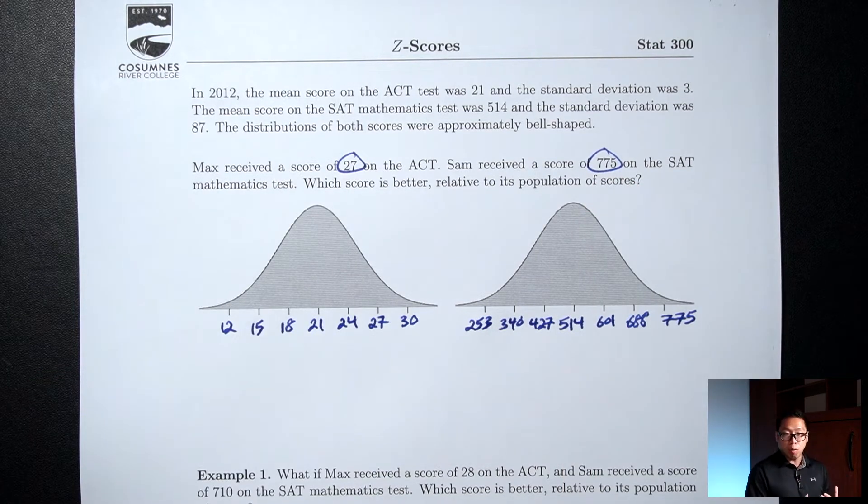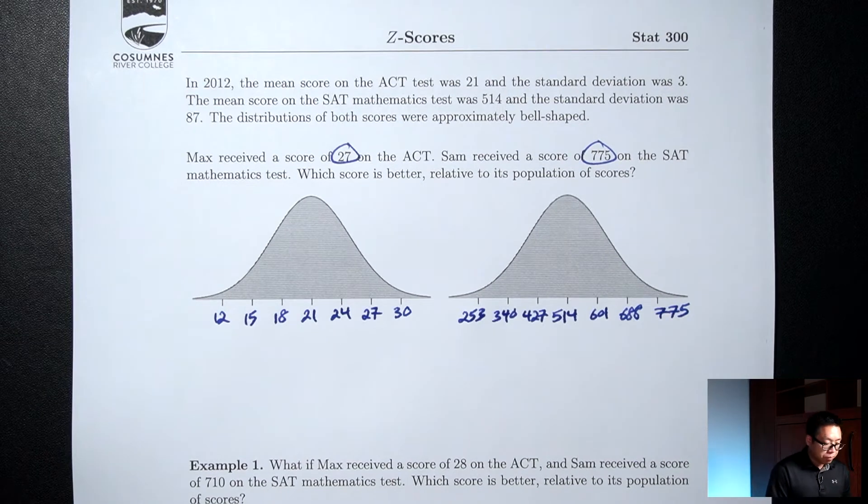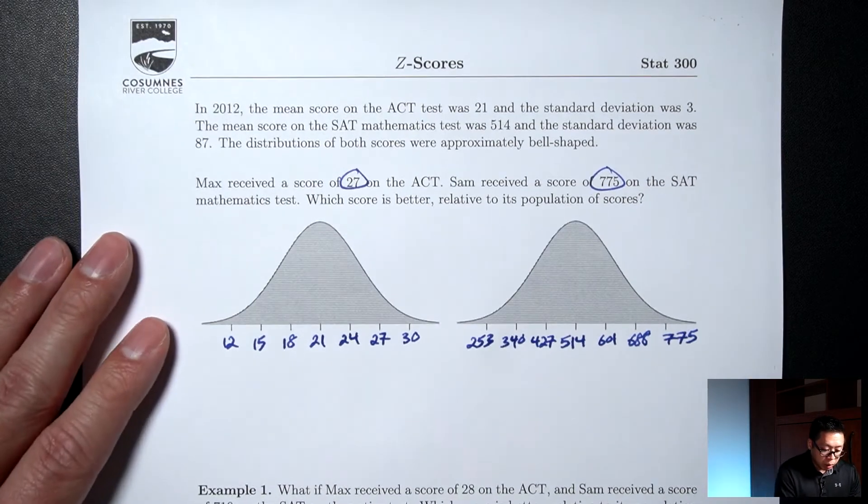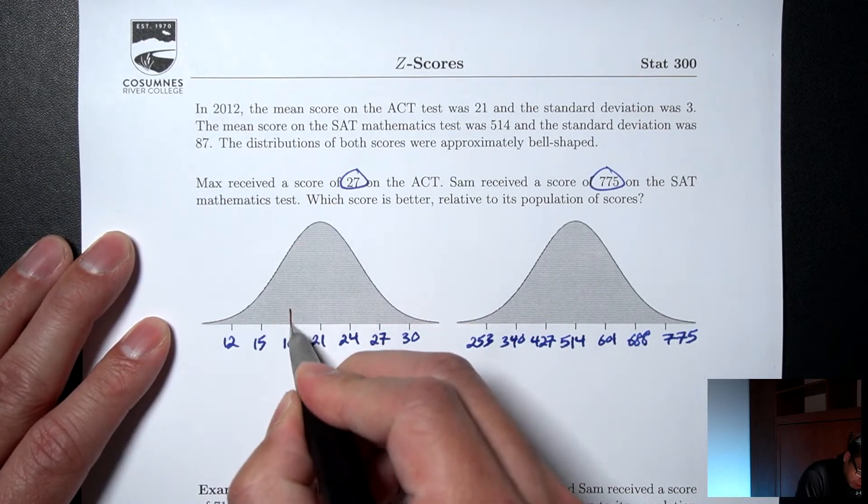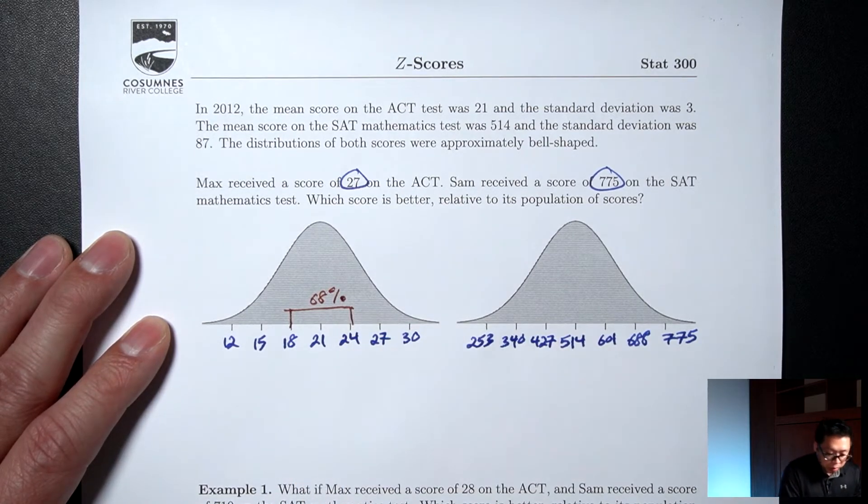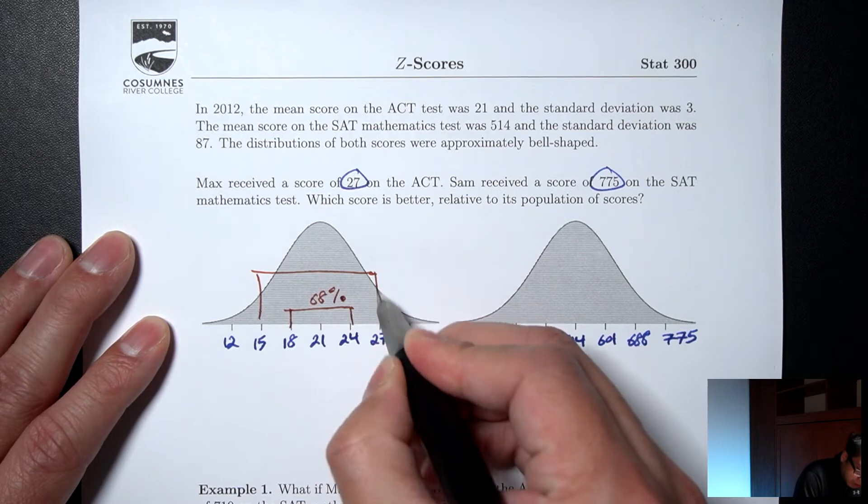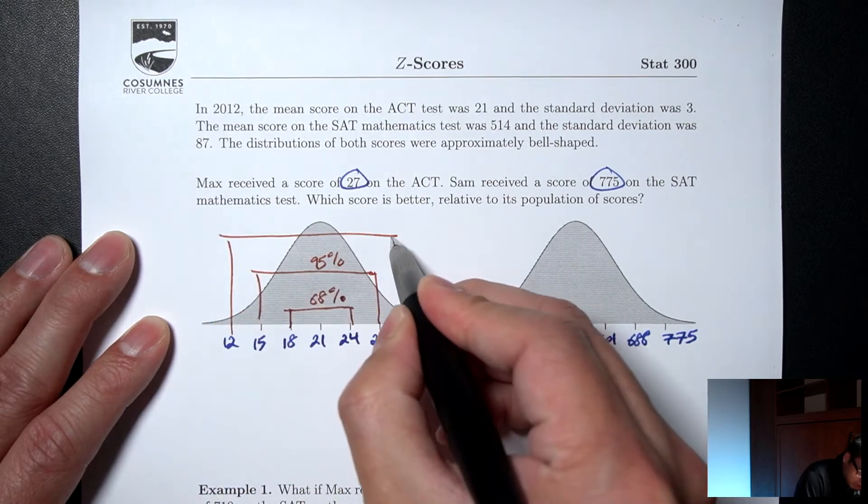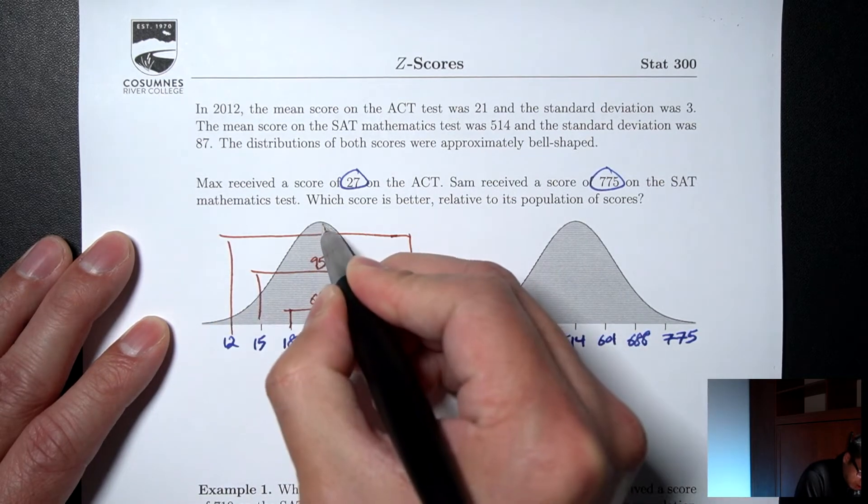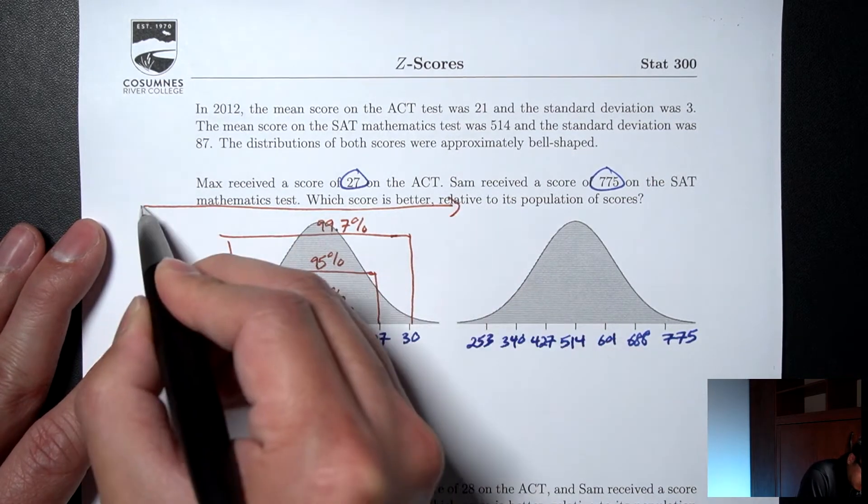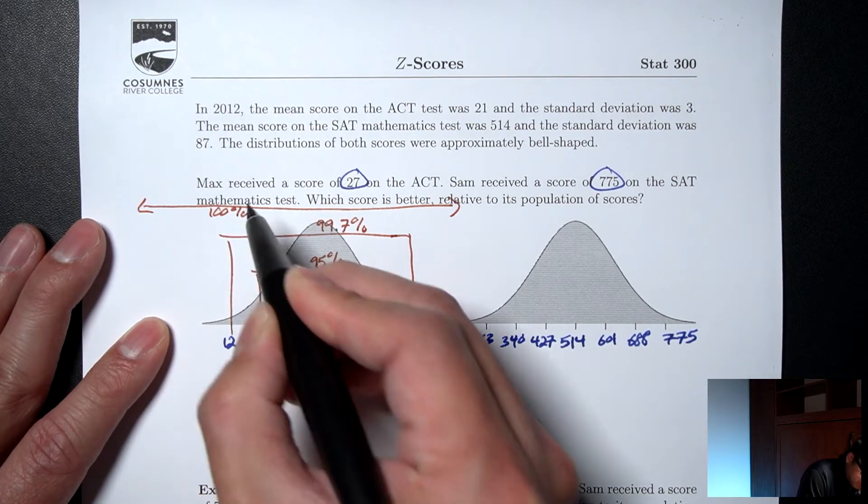So let me elaborate on why that works. The empirical rule says that for both pictures, the percentages are the same. So the percentages I'm talking about are between one up and one down is 68% of our data. Between two up and two down is 95%. Between three up and three down is 99.7%. And then the entire thing is 100%.